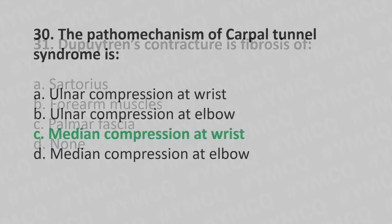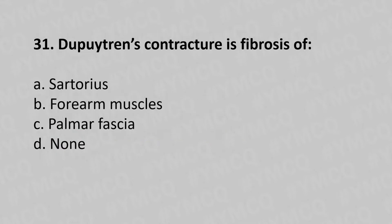Moving to our 31st question: Dupuytren's contracture is the fibrosis of option A sartorius, option B forearm muscle, option C plantar fascia, option D none. The answer is option D none.